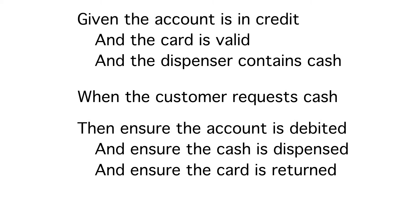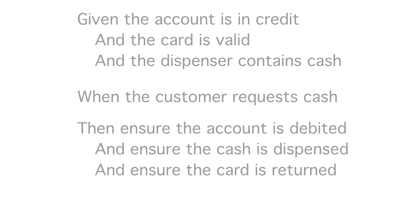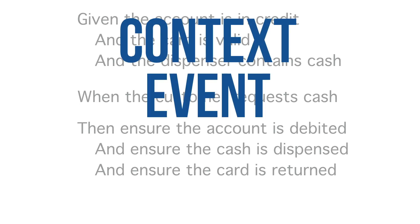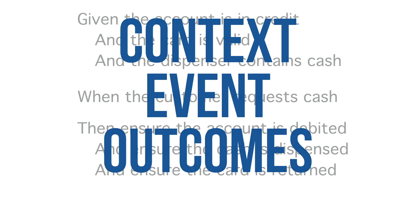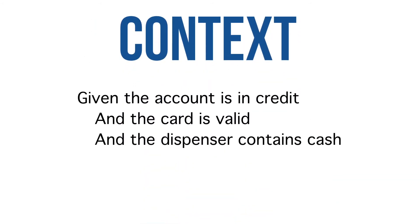Without reading on, I went straight back to the classic example. Here it is, verbatim. Given the account is in credit, and the card is valid, and the dispenser contains cash. When the customer requests cash. Then ensure the account is debited, and ensure the cash is dispensed, and ensure the card is returned. There's a high-level order here: Context, Event, Outcomes — 1, 2, 3. But what about within each of those sections?